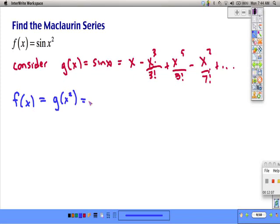We have a property from a previous section that says we can just apply that exponent component to each value of x in these terms of the expansion. So this becomes x squared minus x to the 6th over 3 factorial plus x to the 10th over 5 factorial minus x to the 14th over 7 factorial, and so on.